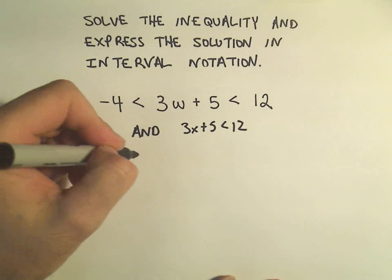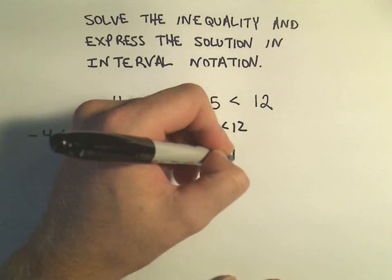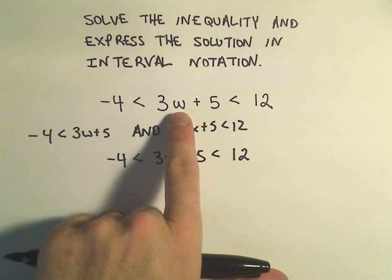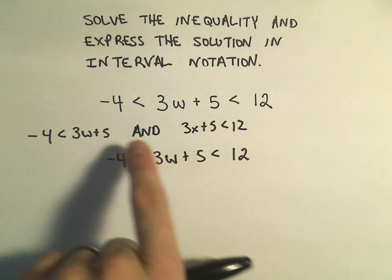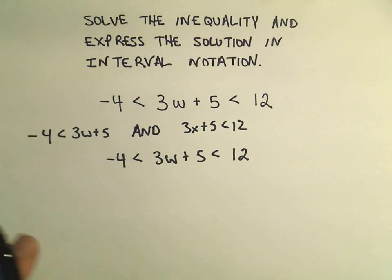So let me go back to the original problem here. Just something that you should think about - what do they mean here? Another way to think about it is we're going to pick some number w, multiply by 3, add 5. At the end of the day, it's got to be between -4 and 12. Those are the numbers that we are looking for.